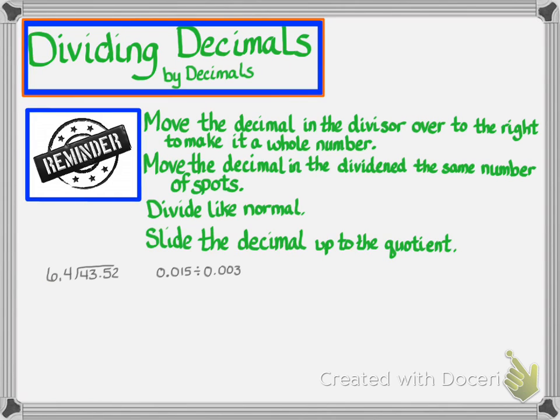The last two problems we're going to complete are on this screen: dividing decimals by decimals. What you want to do is remember that you have to move the decimal in the divisor over to the right to make it a whole number. You would move it however many times to the right until that outside number, that divisor number, becomes a whole number. You also need to be fair, so what you do to one number you must do to the other.